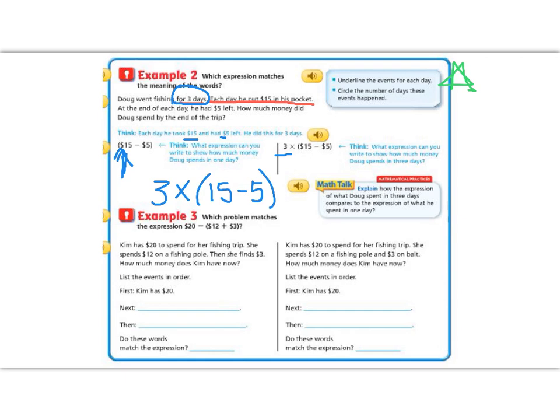Example 3. Which problem matches the expression 20 minus 12 plus 3? So keep in mind the parentheses tell us what to do first. So 12 plus 3 has to happen first, and then we're going to subtract it from 20. Let's read and see which one makes sense. Kim has $20 for her fishing trip. She spends $12 on a fishing pole. Then she finds $3. How much money does she have now?